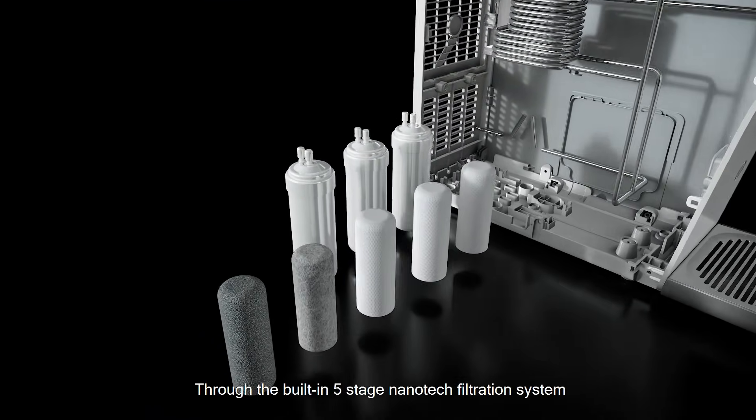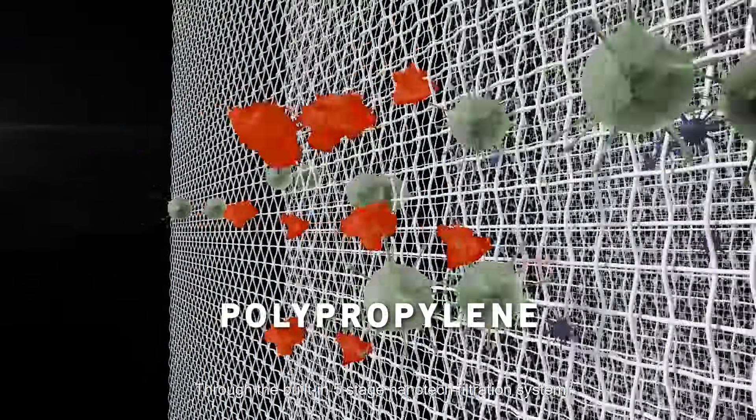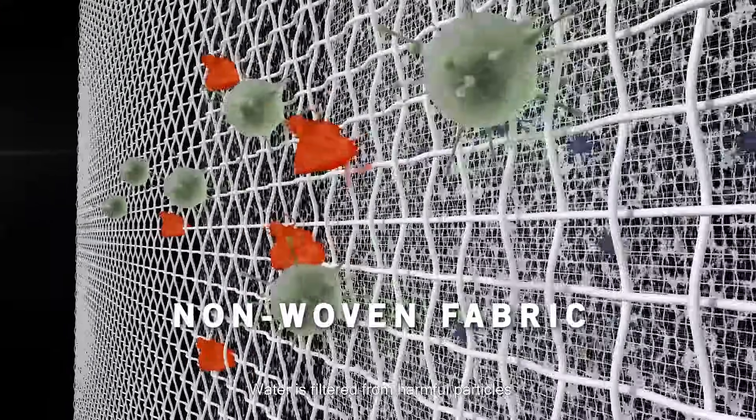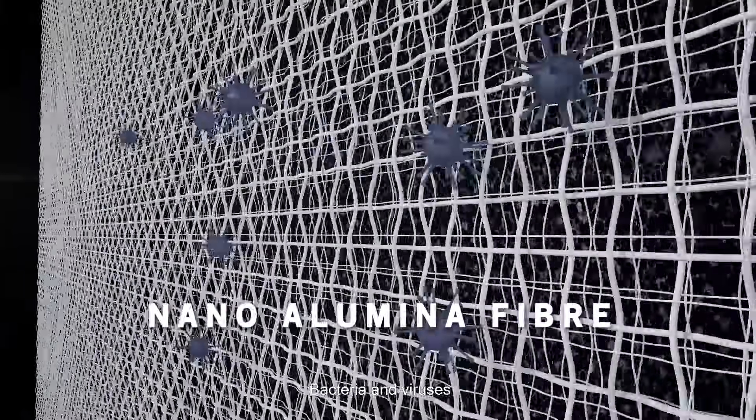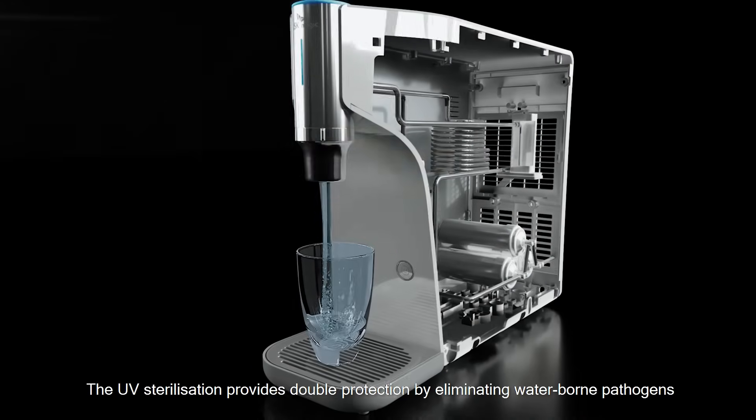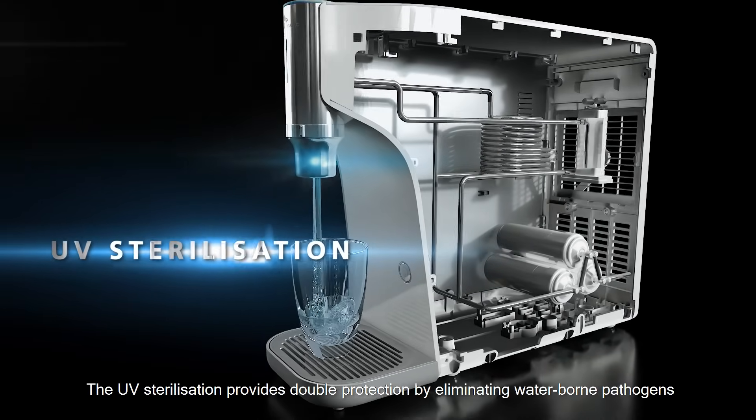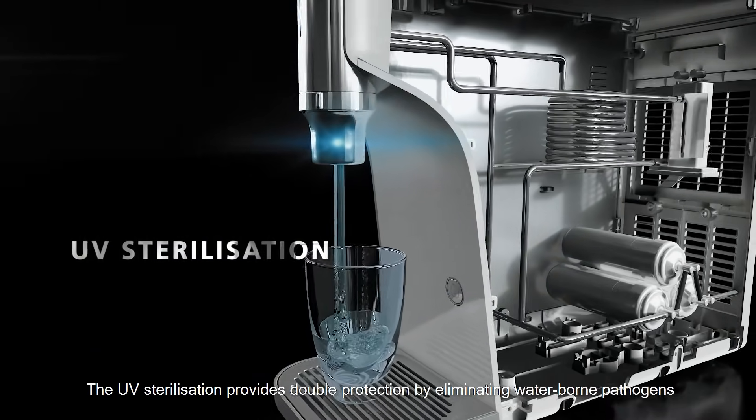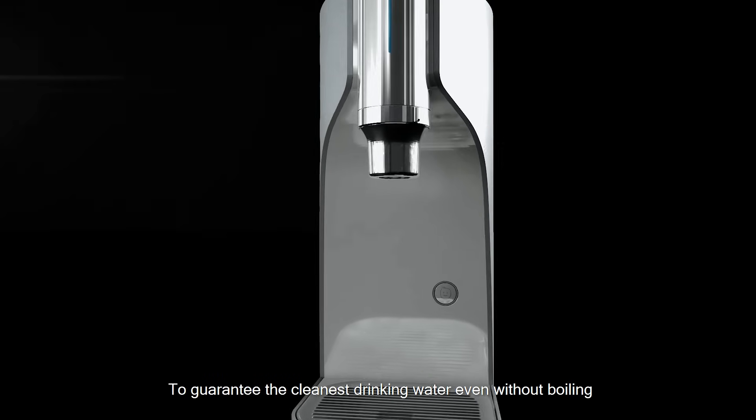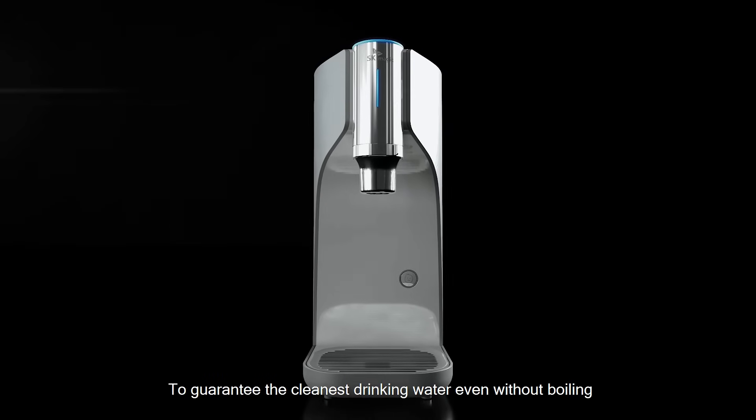Through the built-in five-stage nanotech filtration system, water is filtered from harmful particles, bacteria and viruses. Finally, the UV sterilization provides double protection by eliminating water-borne pathogens to guarantee the cleanest drinking water, even without boiling.